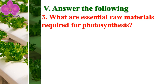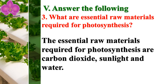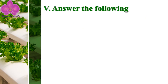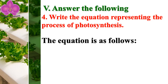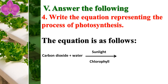What are the essential raw materials required for photosynthesis? The essential raw materials required for photosynthesis are carbon dioxide, sunlight, and water. Question number four: write the equation representing the process of photosynthesis. The equation is: carbon dioxide plus water — with sunlight and chlorophyll — gives glucose plus oxygen.